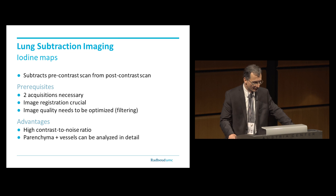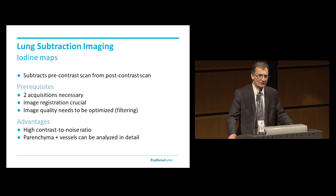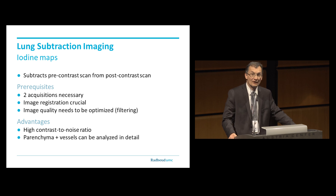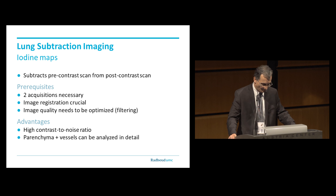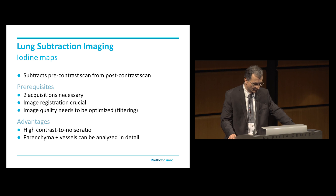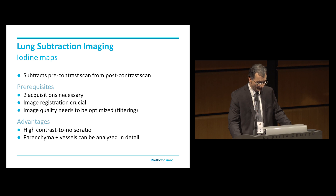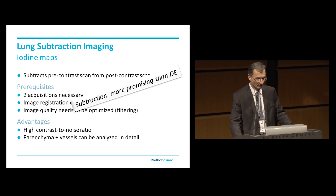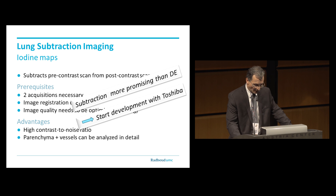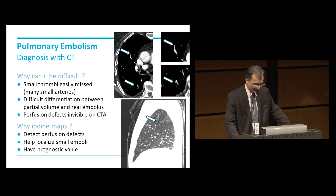Subtraction imaging subtracts a pre-contrast scan from a post-contrast scan. You need two acquisitions, and the crucial thing is image registration, because you have to subtract two images and they have to be as identical as possible. Like with dual energy, you need optimized filtering to regain image quality in these images, but the intrinsic signal-to-noise is much better. It gives you the opportunity to analyze not only parenchyma but also vessels. Because that's more promising, we started developing this together with Toshiba. And one of the obvious applications is pulmonary embolism.